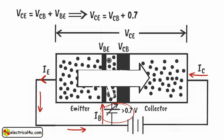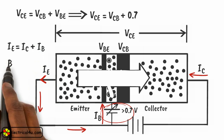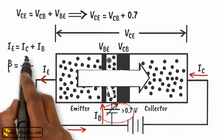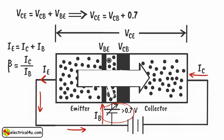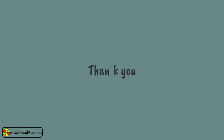So the emitter current is the sum of base current and collector current. The ratio of collector current to base current is known as current gain in common emitter mode, denoted as beta. Therefore, beta equals IC divided by IB. This was the basic concept of a transistor. Hope you got the idea. Thank you.